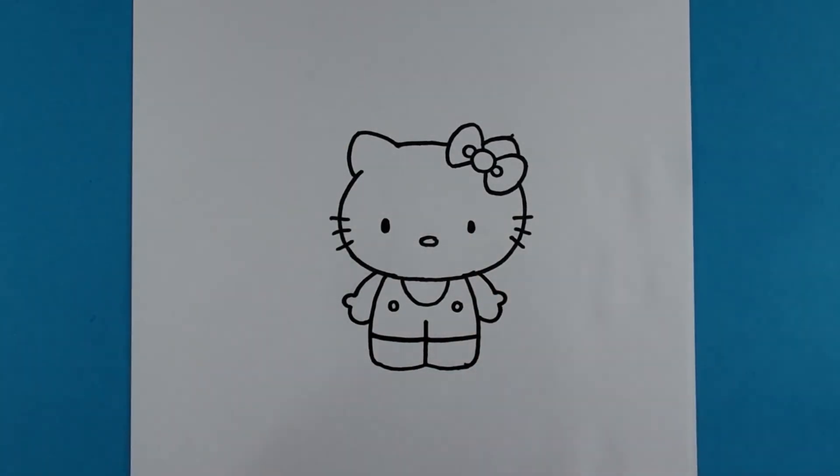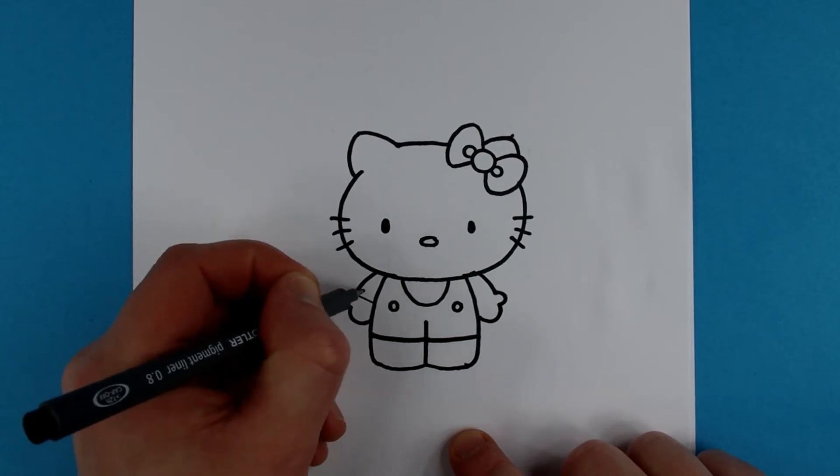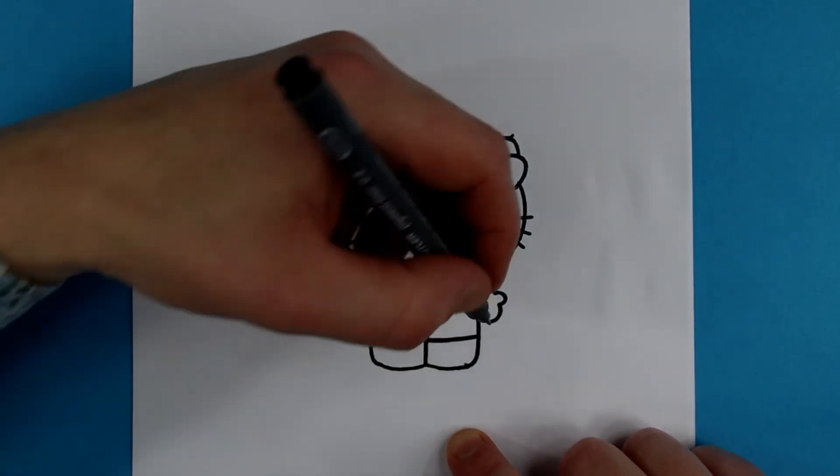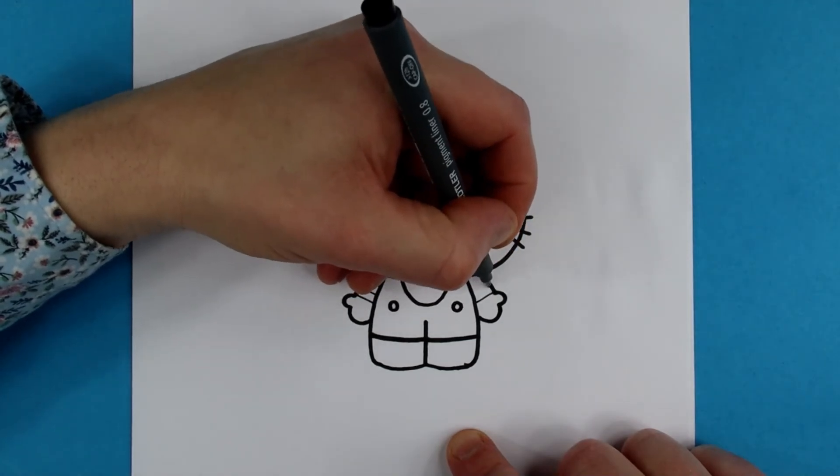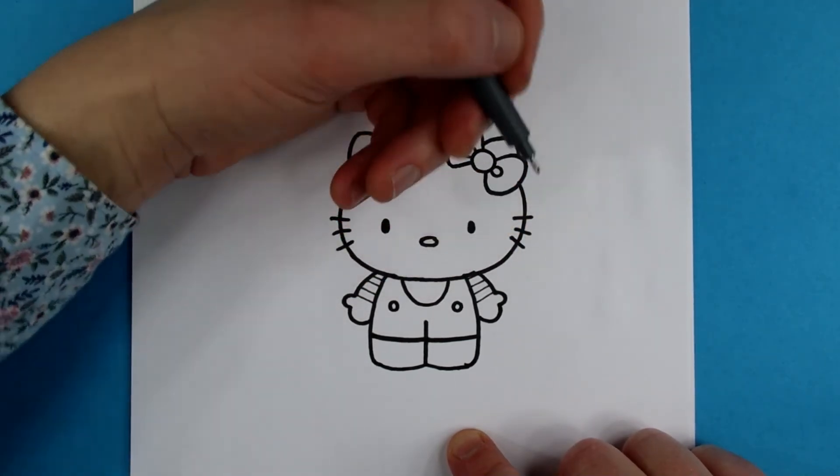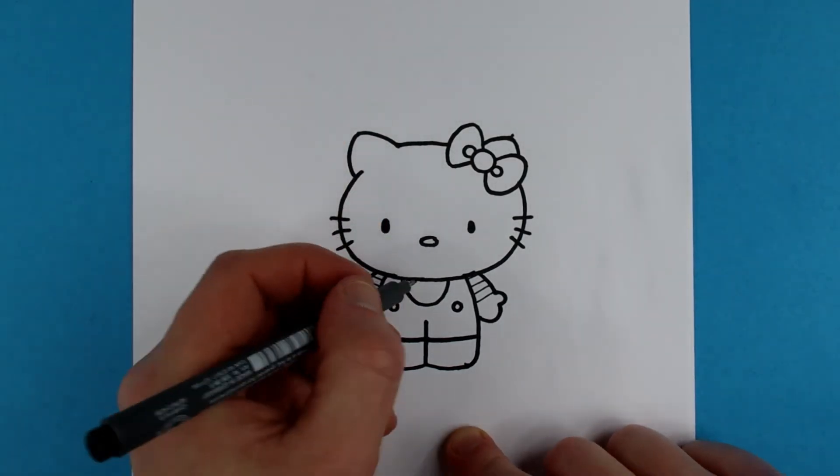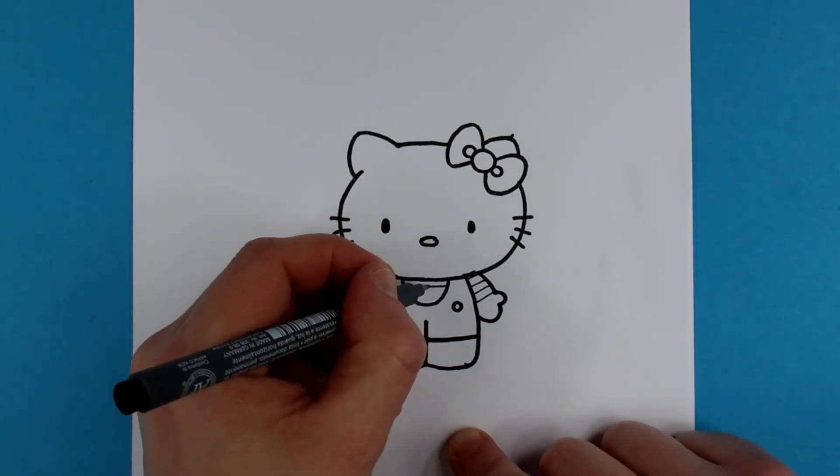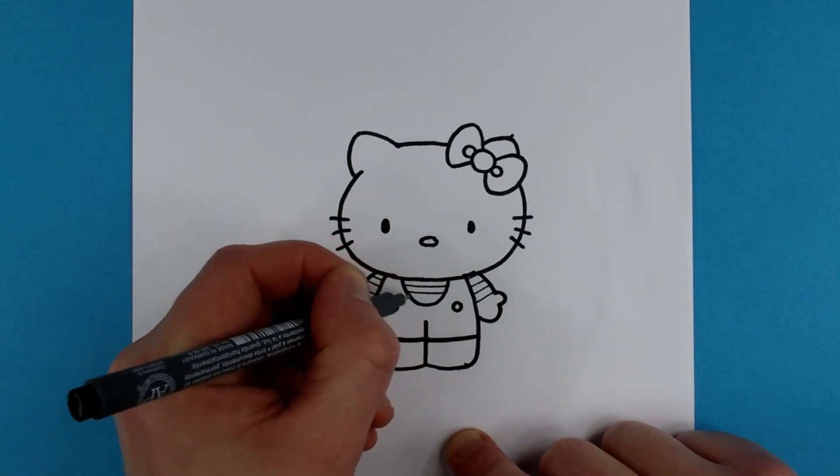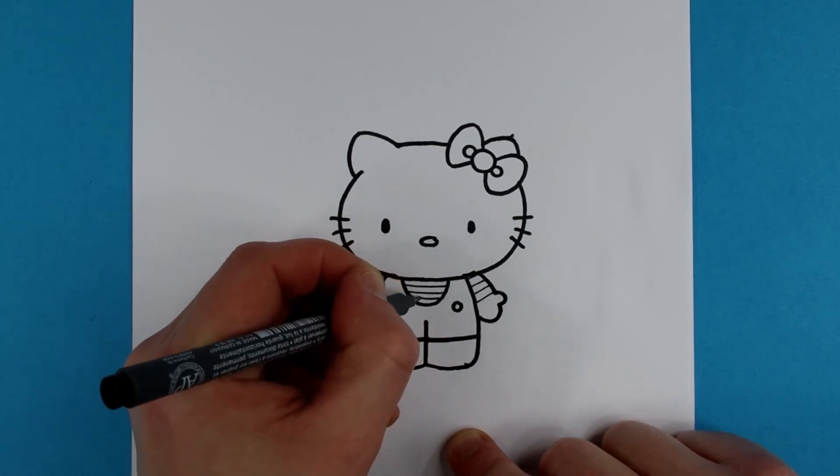I'm going to get my fineliner to place in some details. Like this. Another sleeve. And the same striping is coming over here. And the last one like this.